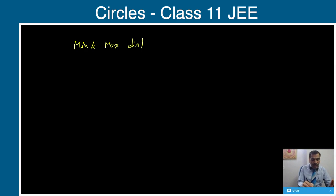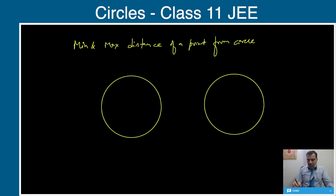We'll discuss the minimum and maximum distance of a point from a circle. We have just done position of a point with respect to a circle - that the point may lie inside the circle, or it may lie outside, or it may lie on the circle.